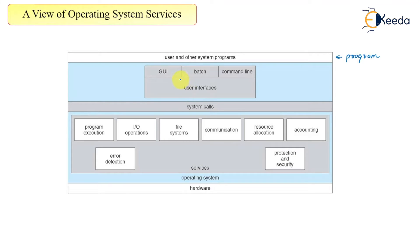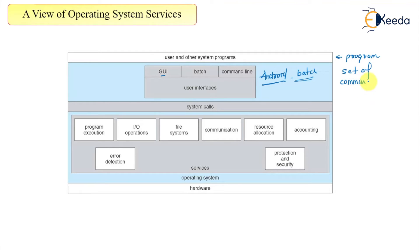The next is the user interface, and here it can be a graphical user interface, which is very common nowadays — even in Android we have a very specific graphical user interface. The next interface can be a batch system, where a set of commands or tasks will be given, and the operating system will complete the task and produce the output.